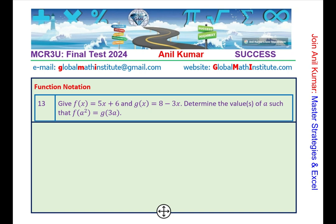Here is question number 13, which is based on function notation. f(x) is given to you as 5x + 6. g(x) is 8 - 3x. Determine the values of A such that f(A²) = g(3A). Once you have understood quadratic functions, now this is a key question based on function notation and quadratic functions.